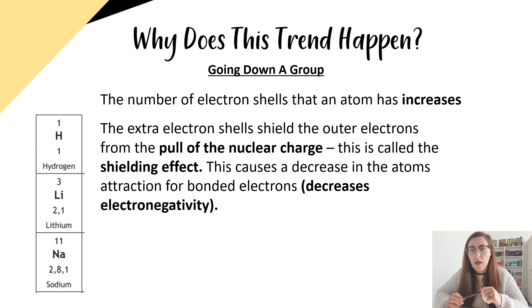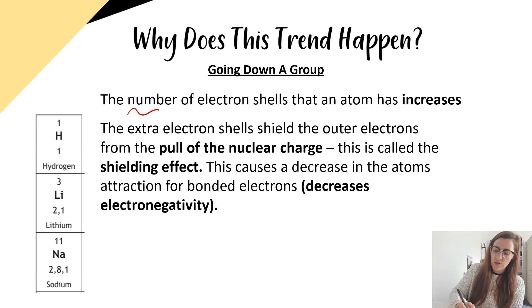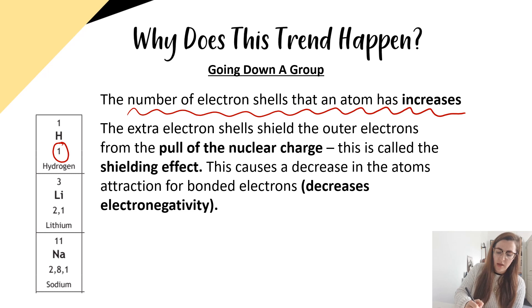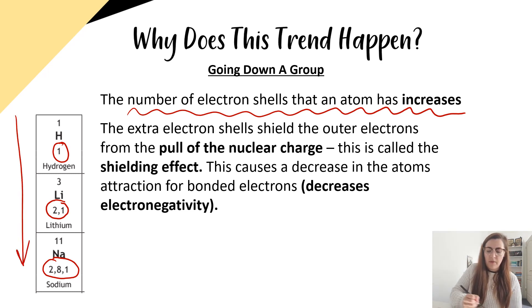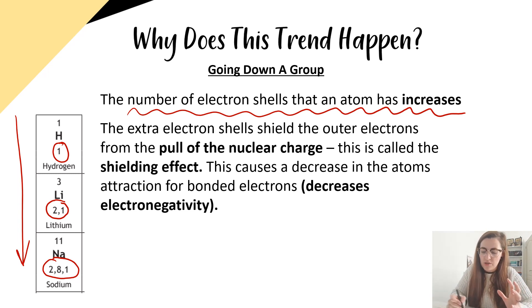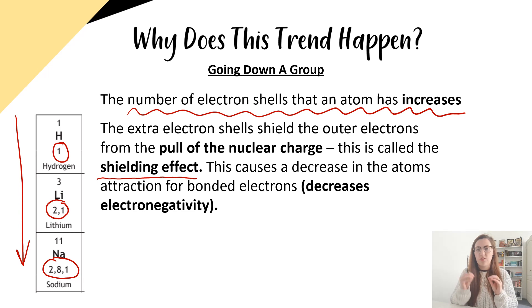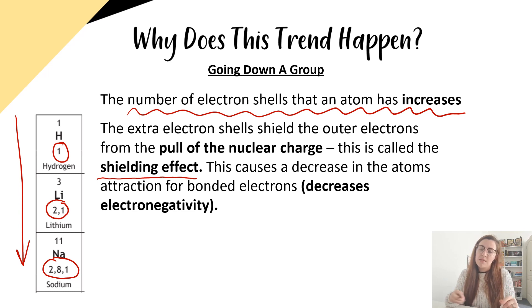Looking at the trend going down a group: electronegativity decreases. As we go down a group, the number of electron shells increases — hydrogen has one, lithium has two, sodium has three. Those extra electron shells shield the outer electrons from the nuclear charge, which is called the shielding effect. The inner electrons act as layers between the nucleus and the outer electrons, so those outer electrons feel less nuclear attraction, meaning electronegativity decreases.